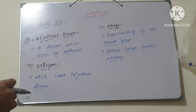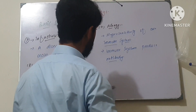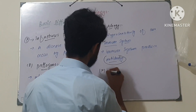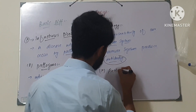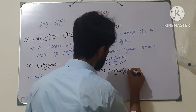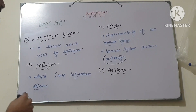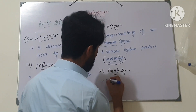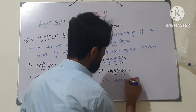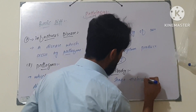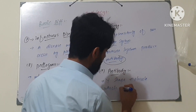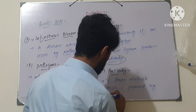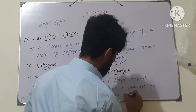Antibody is a Y-shape molecule which is produced by plasma cell.